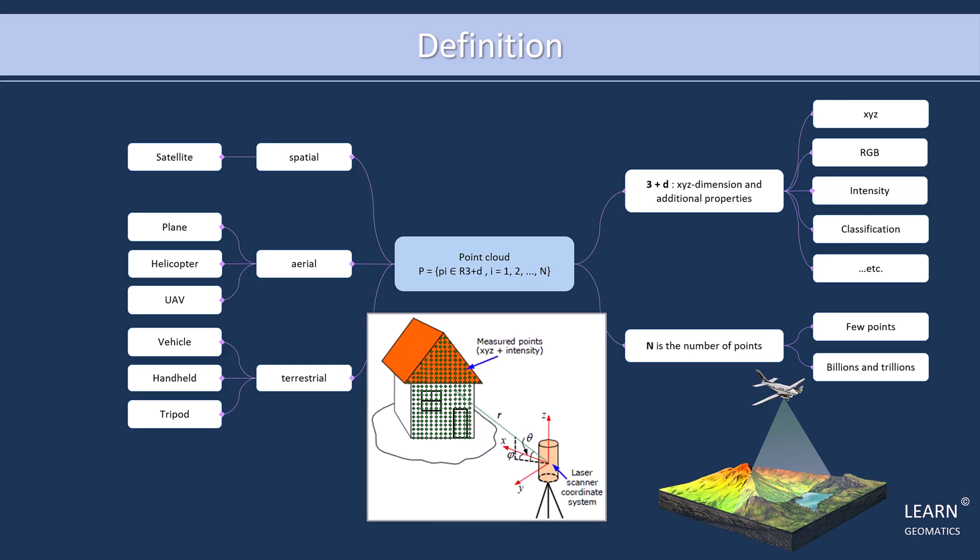However, point clouds can also have additional properties like color, intensity, and classification. Color values are assigned to each point to give it a specific color, while intensity values represent the strength of the signal returned by the sensor.